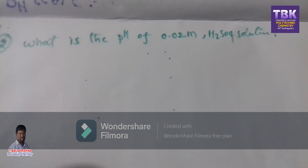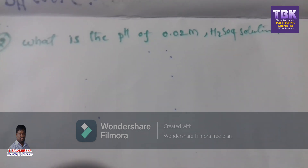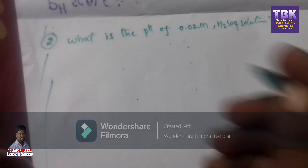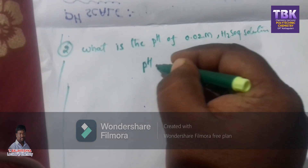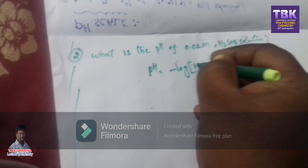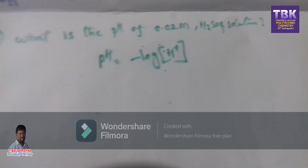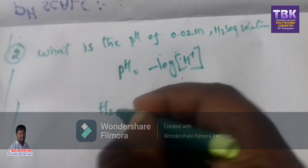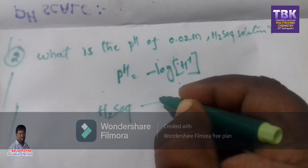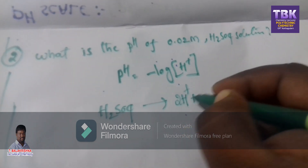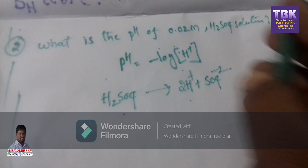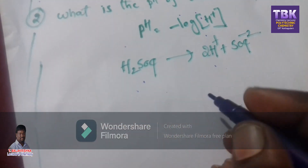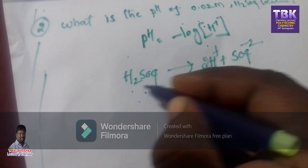Next problem: what is the pH of 0.02 M H₂SO₄ solution? The pH formula is pH = minus log of concentration of H⁺ ion. How to find out the H⁺ ion concentration from this given data? First, write the formula: H₂SO₄ splits into 2H⁺ ions plus SO₄²⁻ ion. Here, 1 H₂SO₄ produces 2 H⁺ ions.